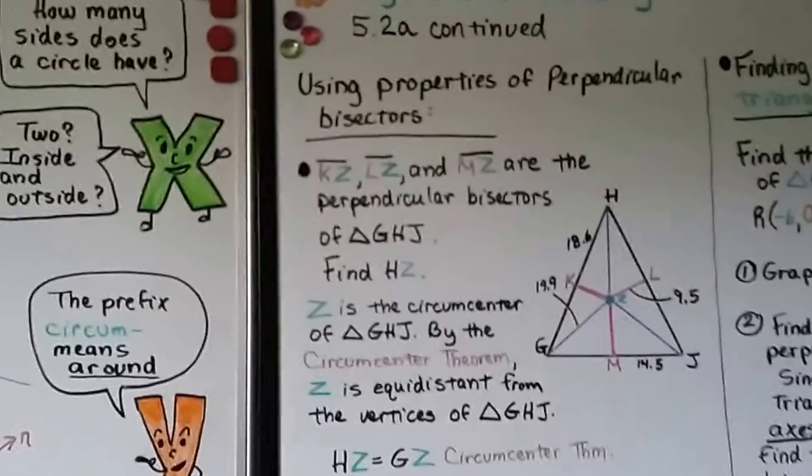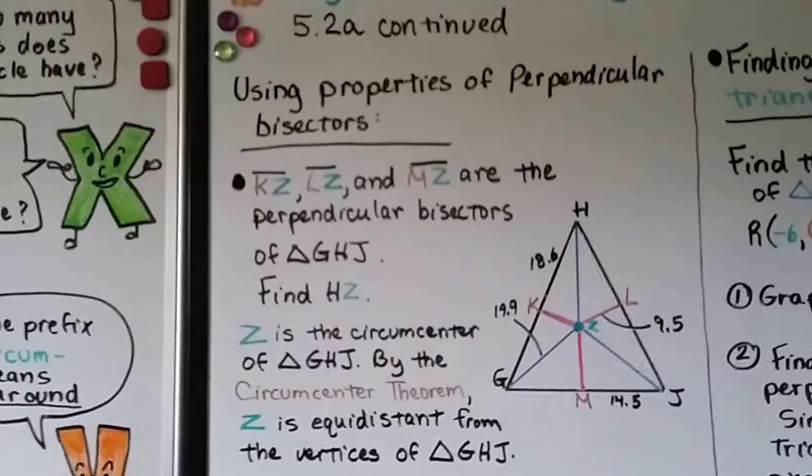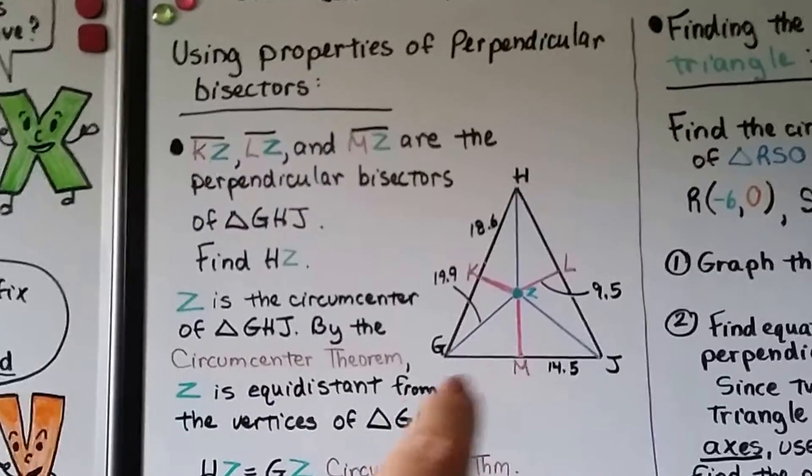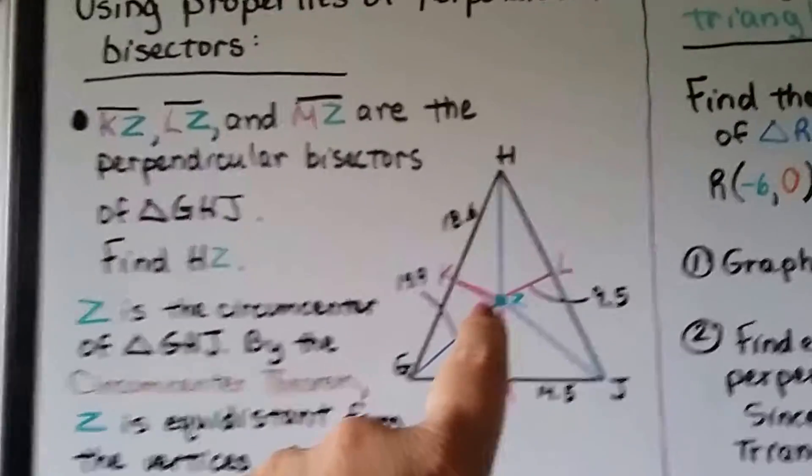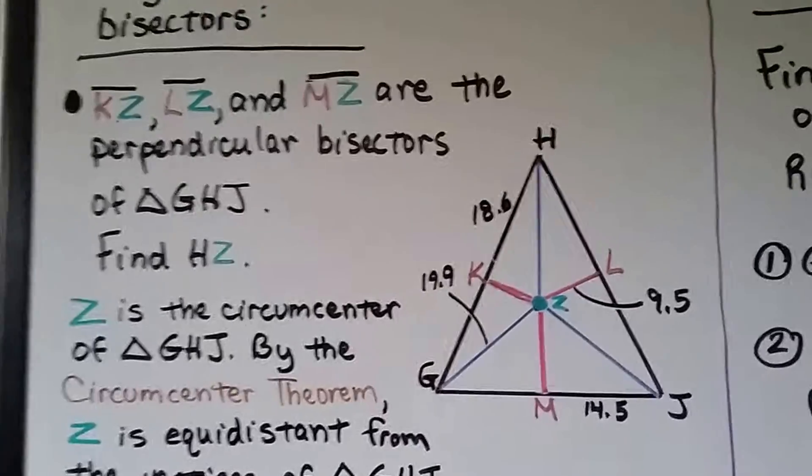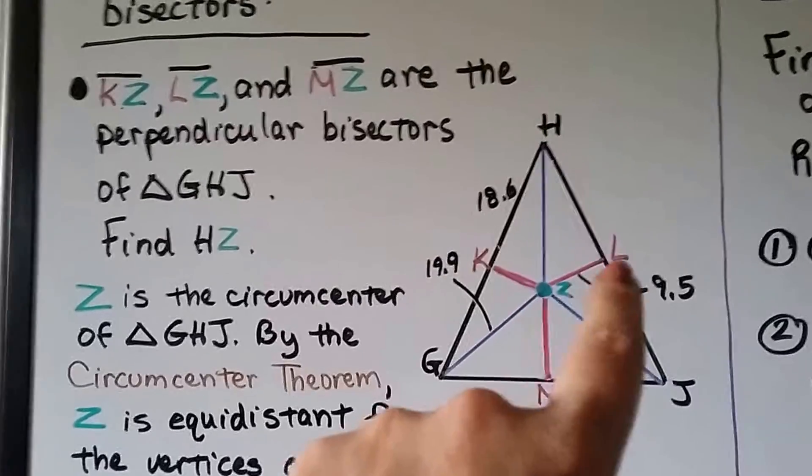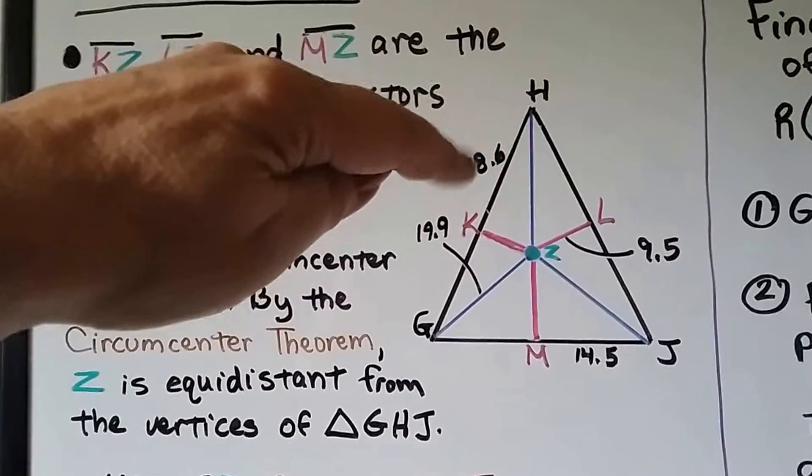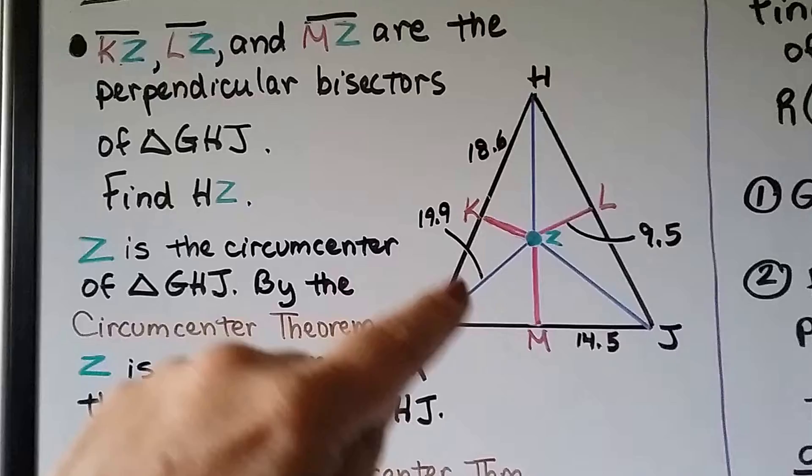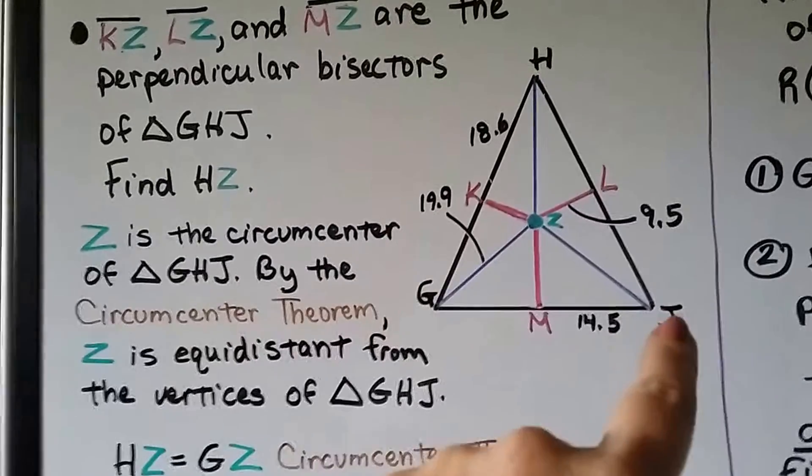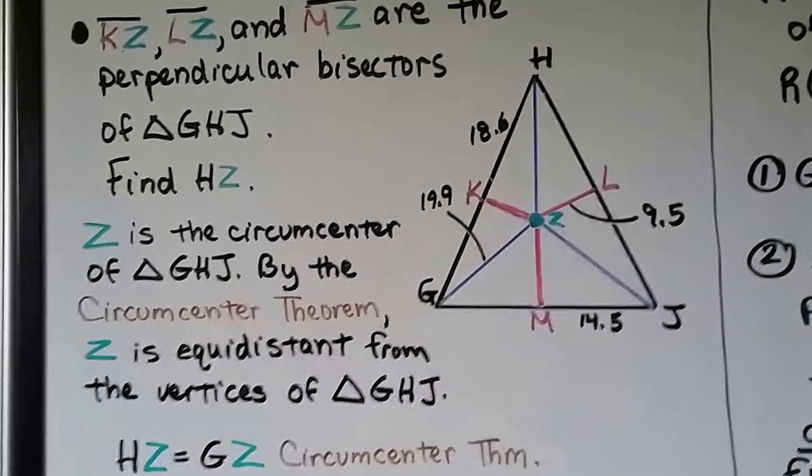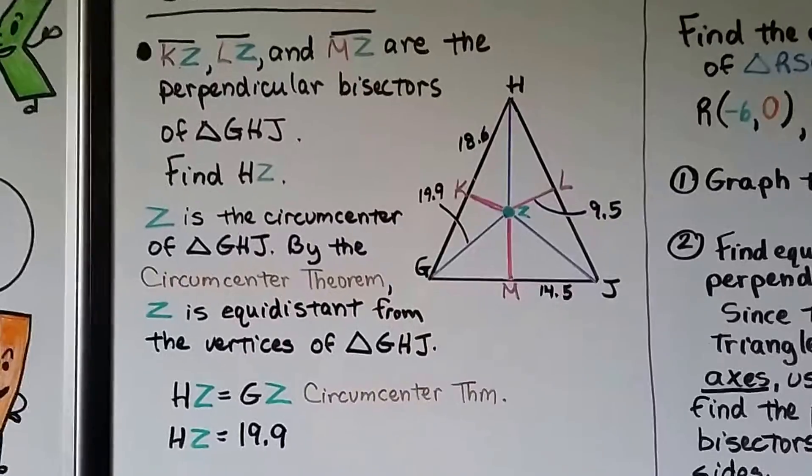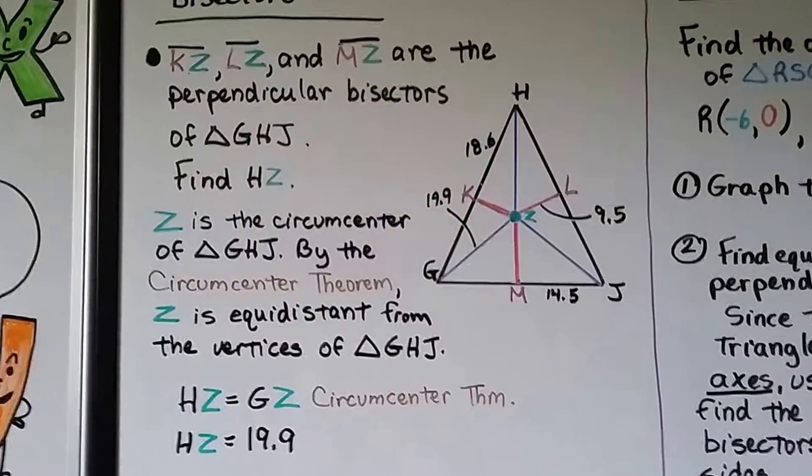Now, using properties of perpendicular bisectors, we've got this drawing with the pink perpendicular bisectors and the blue lines coming from the vertices meeting at the circumcenter Z. We can see that ZL is 9.5, HK is 18.6, GZ is 19.9, and JM is 14.5. We know that these pink lines are the perpendicular bisectors of triangle GHJ.